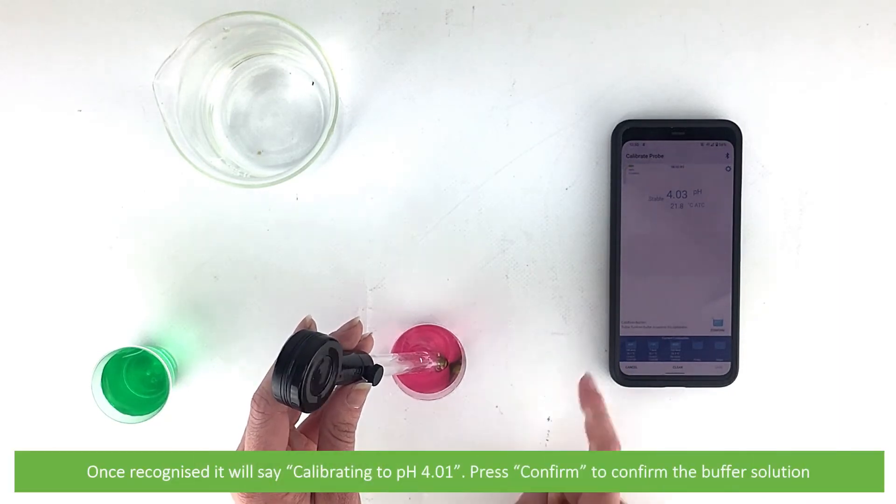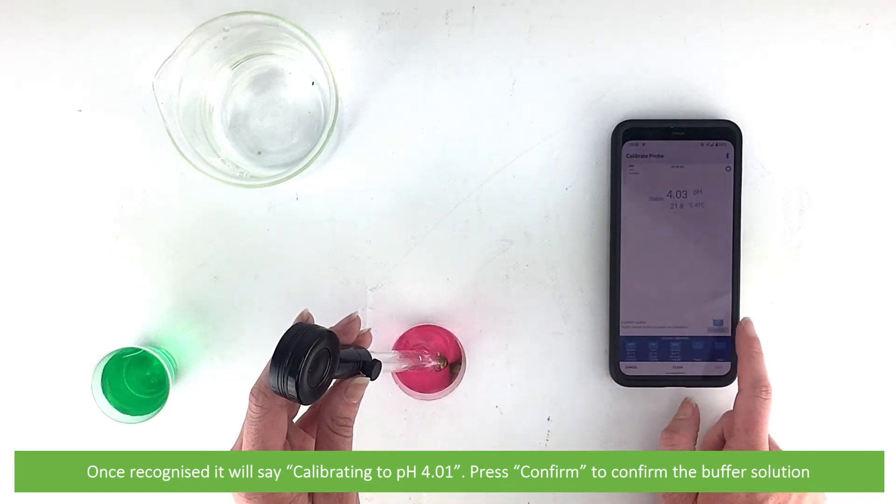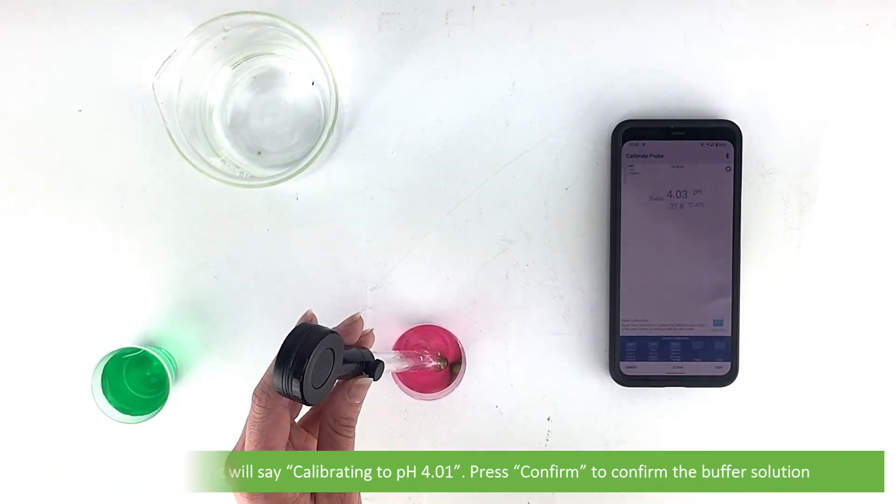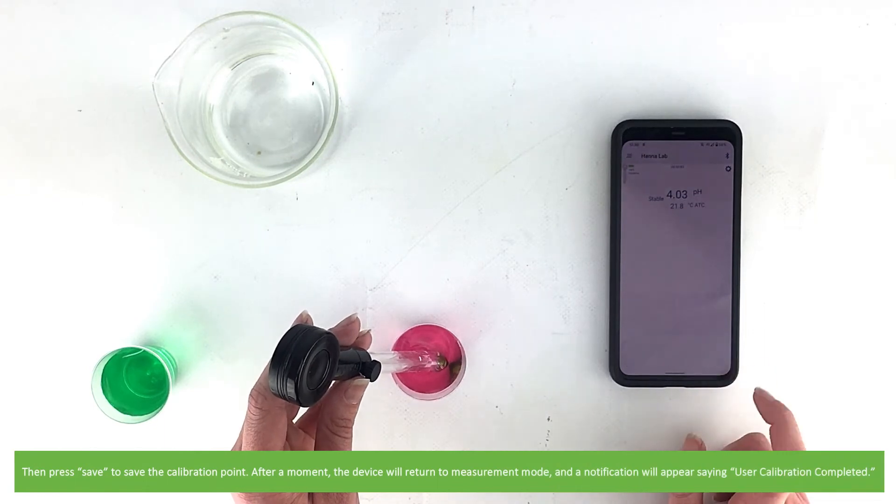Once recognized, it will say calibrating to pH 4.01. Press confirm to confirm the buffer solution. Then press save to save the calibration point.